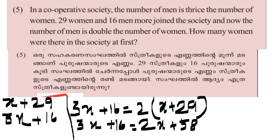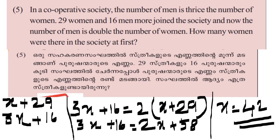Solving: x equals 58 minus 16, which gives x equals 42. So the number of women is 42 and the number of men is 3 times 42.